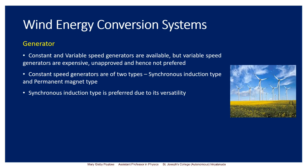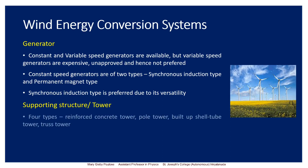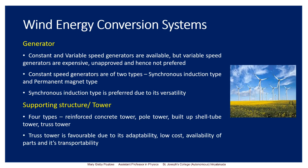The next component is the supporting structure or tower. The tower can have many designs but there are mainly four types: the reinforced concrete tower, the pole tower, the built-up shell tube tower, and the truss tower. The truss tower is preferred because its design is adaptable, it has a low cost, its parts are easily available, and the unit can be easily transported to another site.